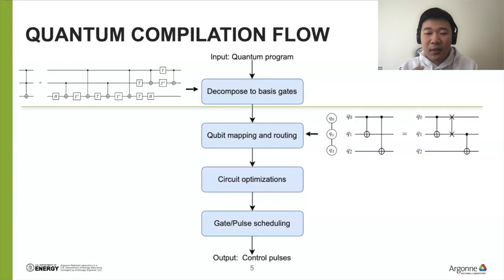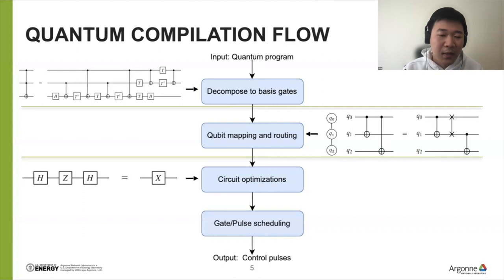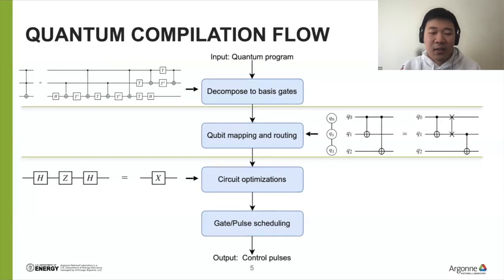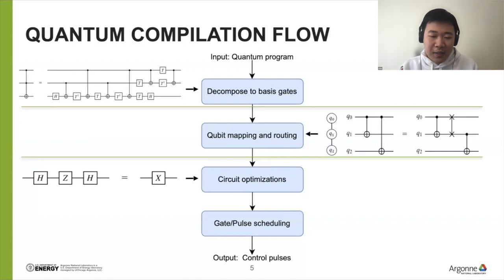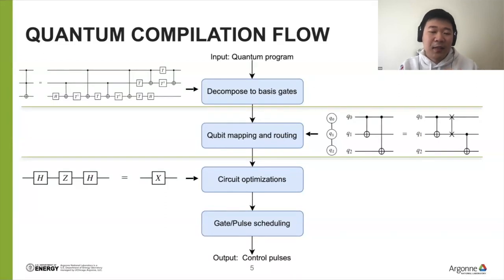After qubit mapping and routing, the circuit is compatible and uses basic gates, but there's still a step of optimizations we can do. For example, a sequence of single-qubit operations can be substituted with a single S gate because they have the same unitary representation. Different circuit optimization approaches include template-based optimizations, commutativity detection, ZX-calculus graphical optimizations, and resynthesis — converting gates back to a unitary and finding the smallest sequence of gates that implements that target unitary.